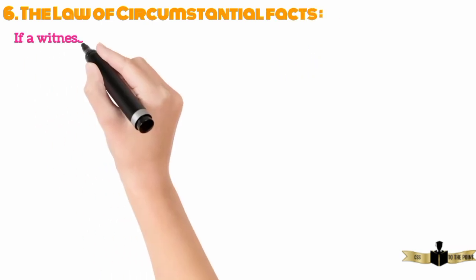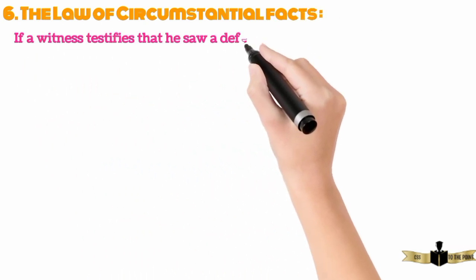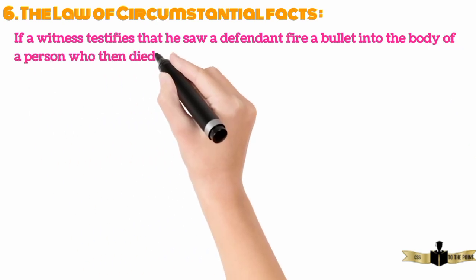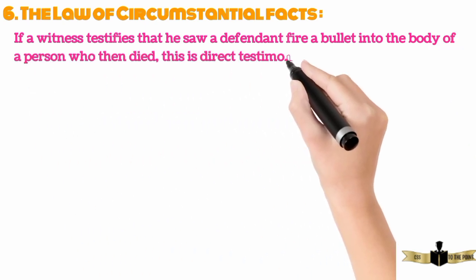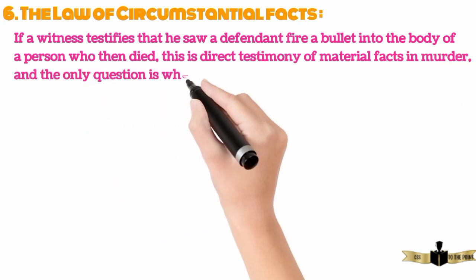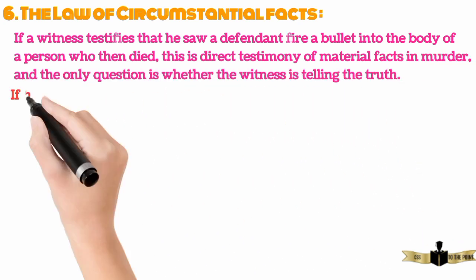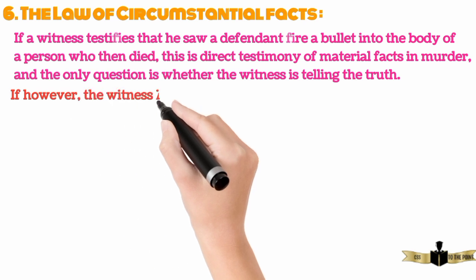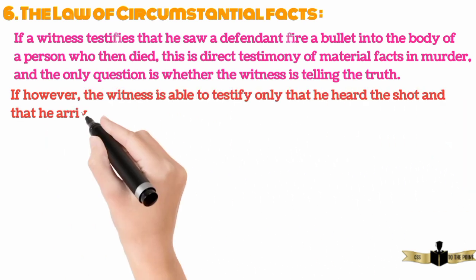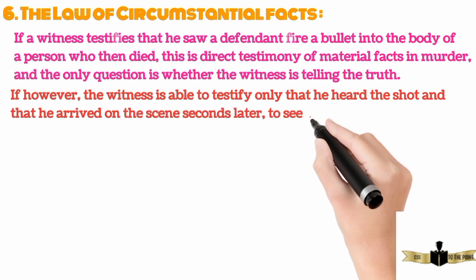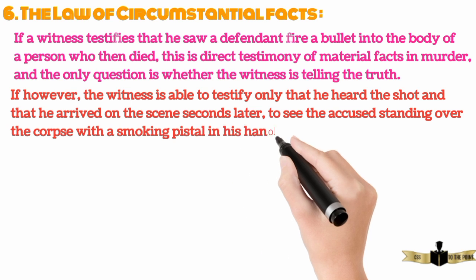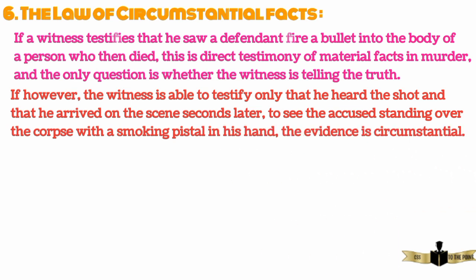If a witness testifies that he saw a defendant fire a bullet into the body of a person who then died, this is direct testimony of material facts in a murder, and the only question is whether the witness is telling the truth. If, however, the witness is able to testify only that he heard the shot and that he arrived on the scene seconds later to see the accused standing over the corpse with a smoking pistol in his hand, the evidence is circumstantial.